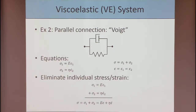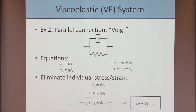Now let's combine a spring and a dashpot in parallel. In this case the strains are the same, but the stresses are added. We take our two equations, sum them up, and eliminate the individual stresses and strains using our rules, again getting a total stress-strain relationship — once more, a first-order linear differential equation.